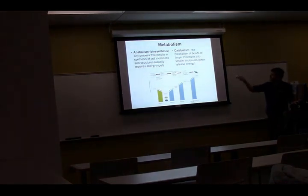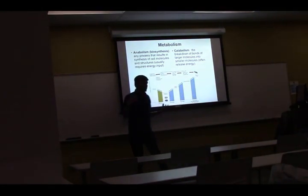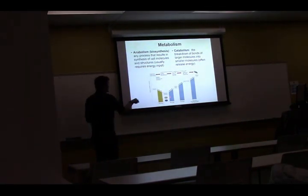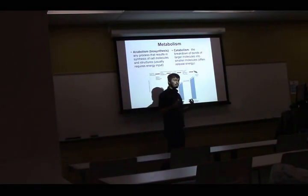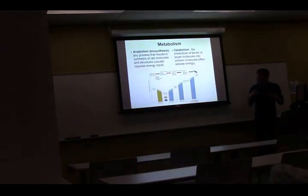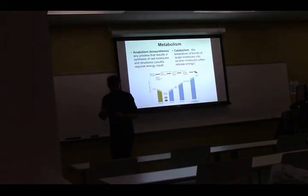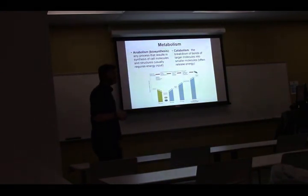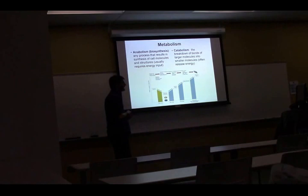Catabolism is where you bring in nutrients, break them down, and release energy, storing it as ATP. We're primarily going to focus on catabolic reactions in this chapter because they're simpler to understand than anabolic reactions. This chapter is primarily going to cover how we take a molecule like glucose, tear it apart, and get energy from it.